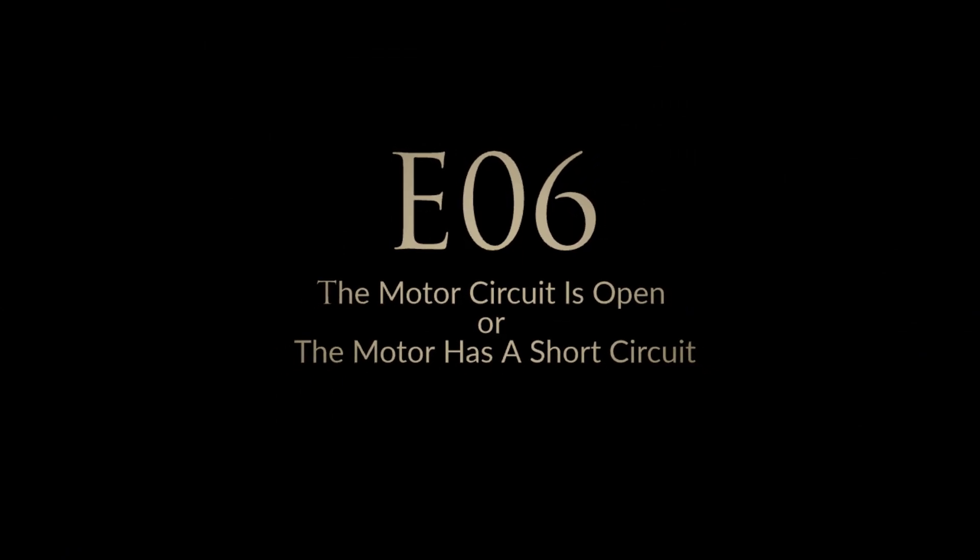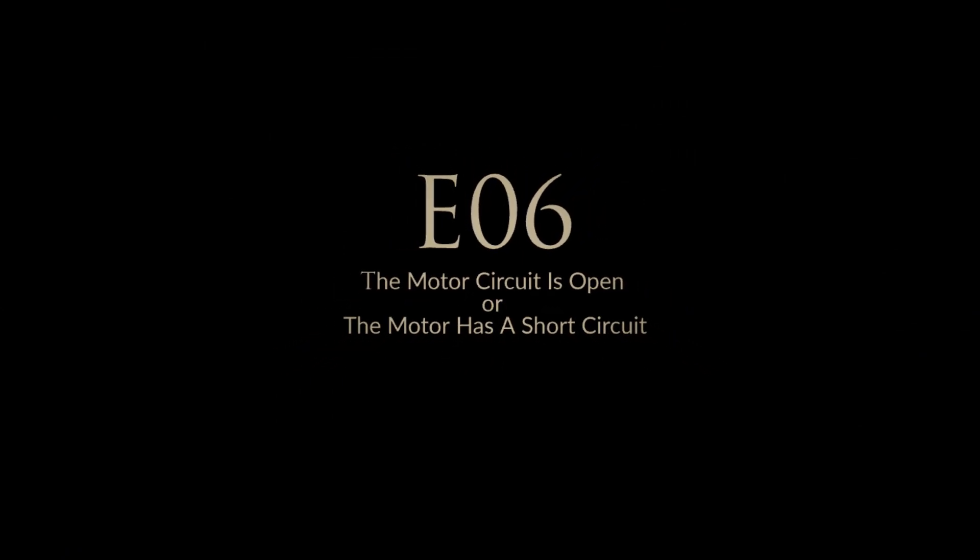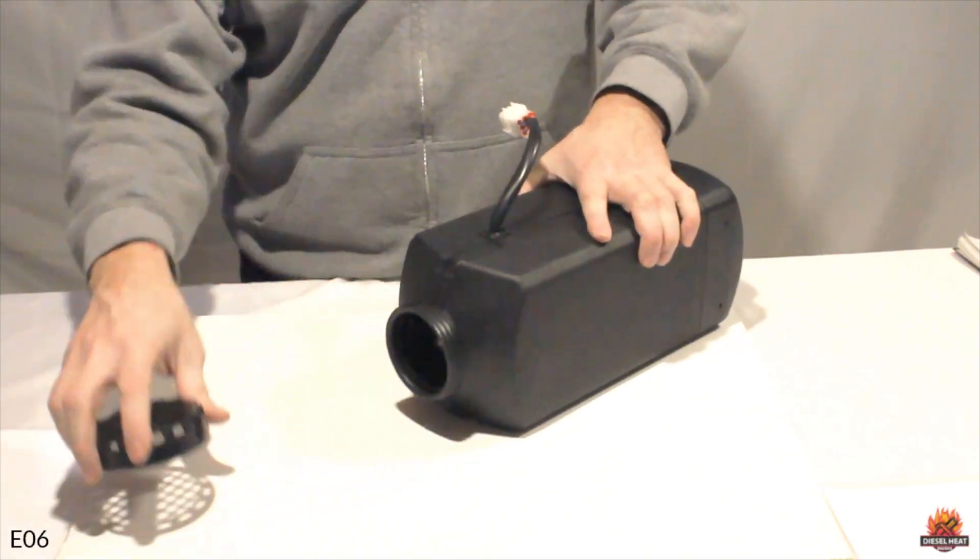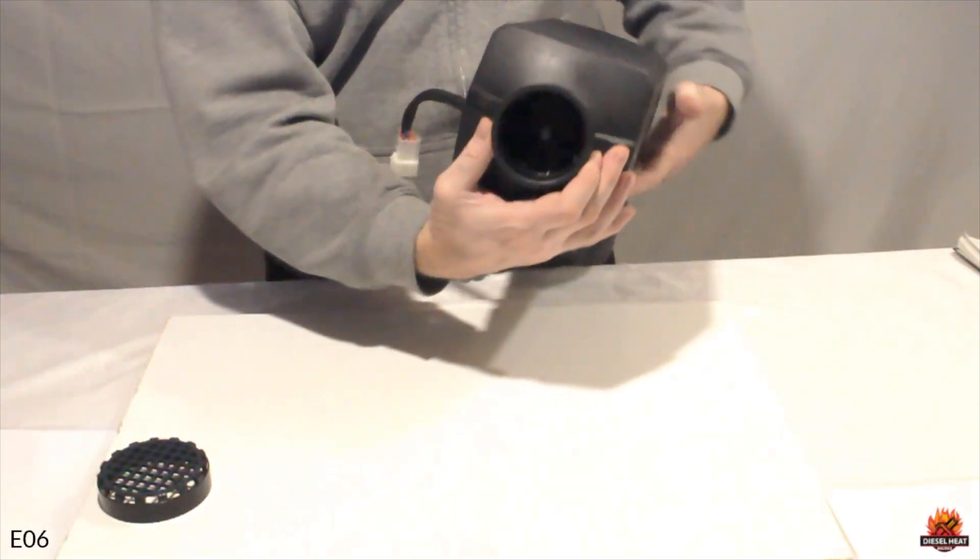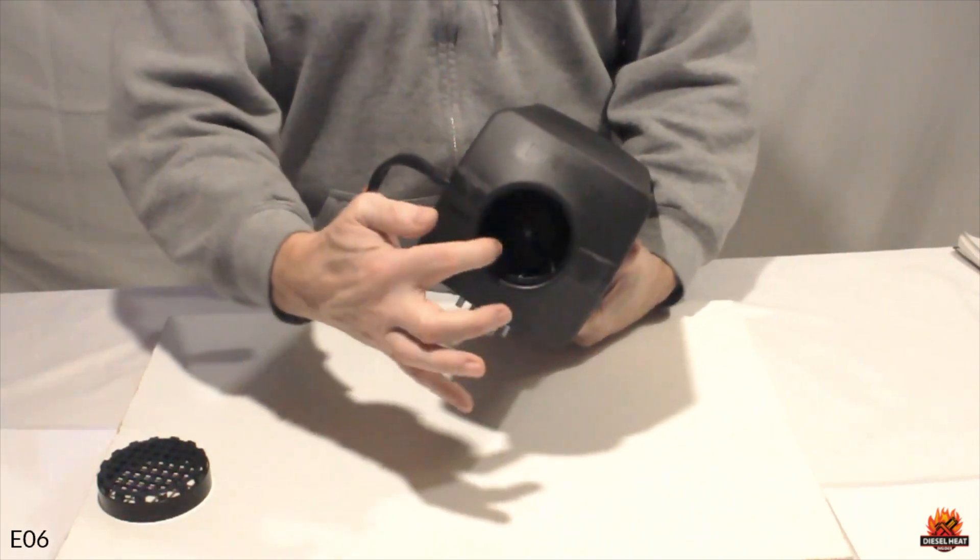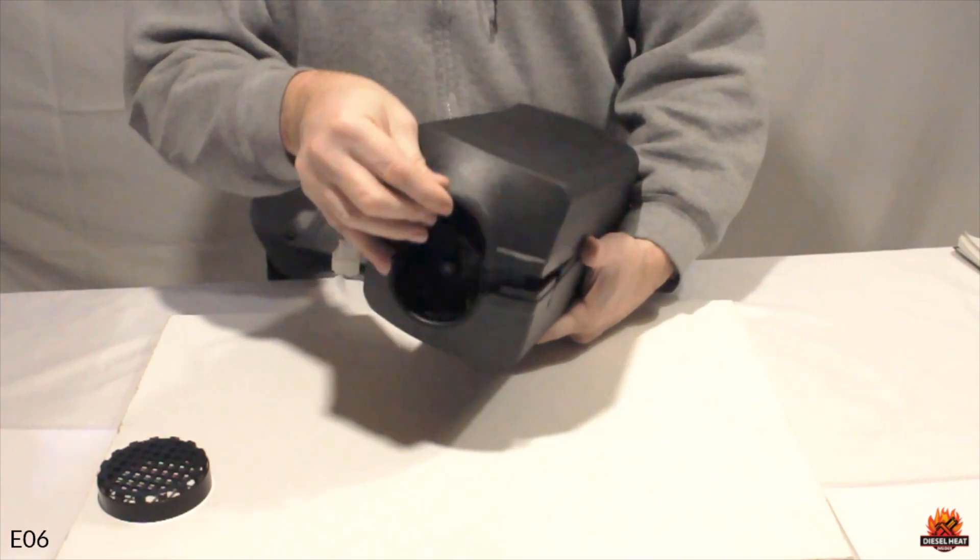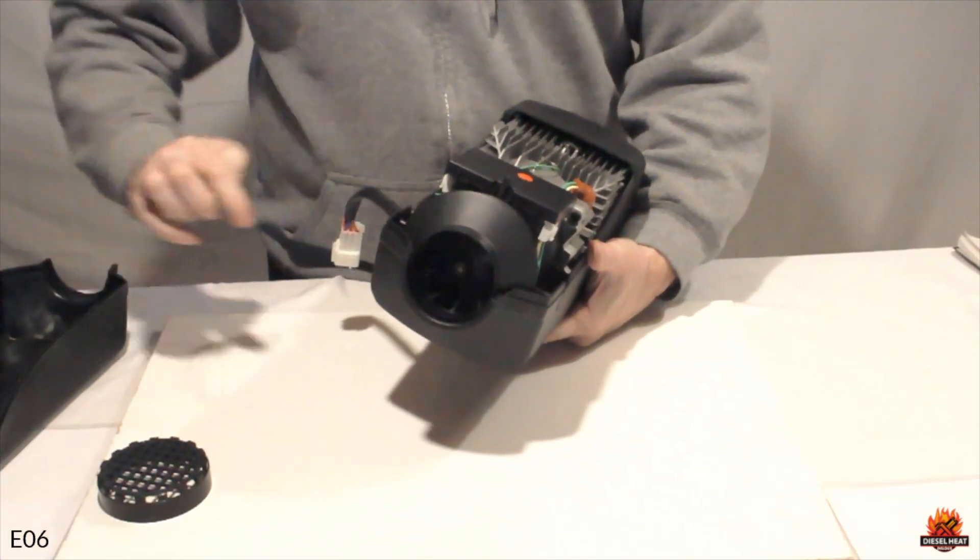Error code 6, the motor circuit is open or the motor has a short circuit. Error code 6 is a fan error code. There are several things that could cause this. Unfortunately, this is a very common error with these diesel heaters. Begin by ensuring that no foreign objects have obstructed your fan, impeding its rotation.